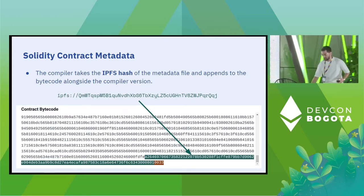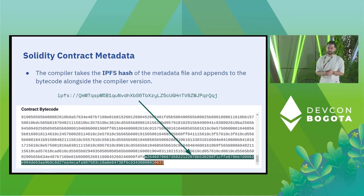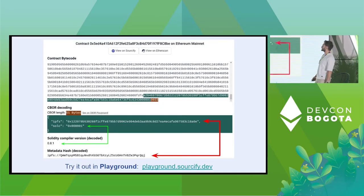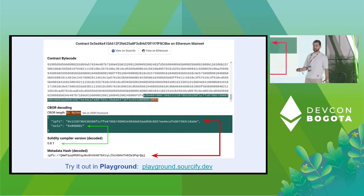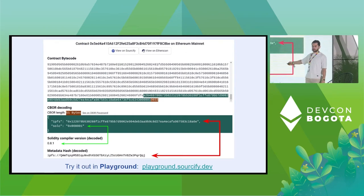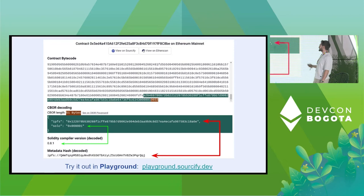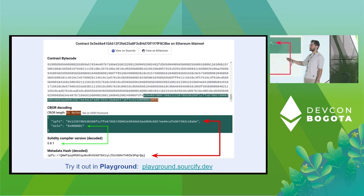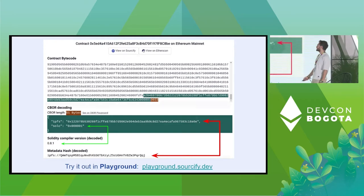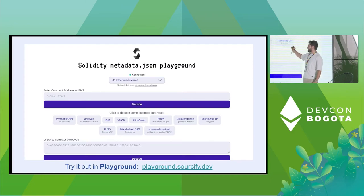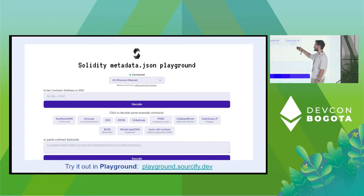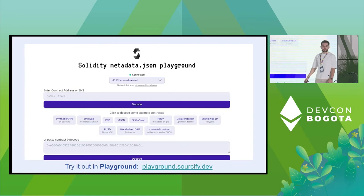You can see how this works in our playground at playground.sourcify.dev. We show how the encoding is done, what the encoding contains, and we also try to find metadata from IPFS. There are some example contracts you can click on, or you can provide a contract address or paste the contract bytecode and we will try to visualize how this works.